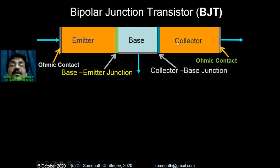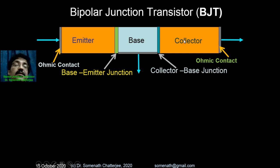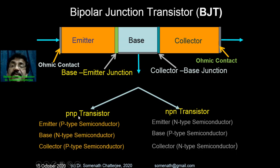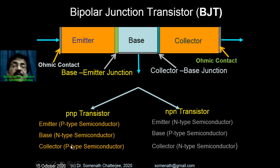The gray part shown is basically the ohmic contact, which is important to make the connection between the external lead and the emitter, base, or collector. Two types of transistors exist: one is the PNP transistor and the other is the NPN transistor. In PNP, the emitter is p-type, the base is n-type, and the collector is p-type. In NPN, the emitter is n-type, the base is p-type, and the collector is n-type.